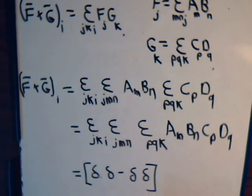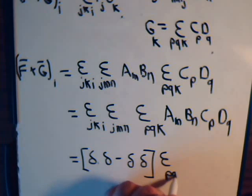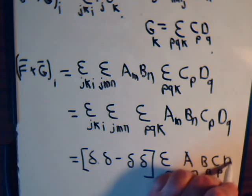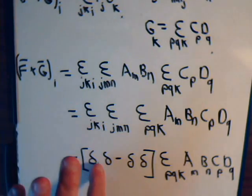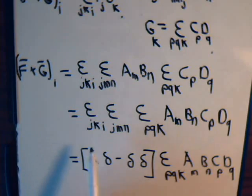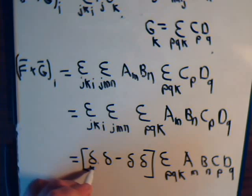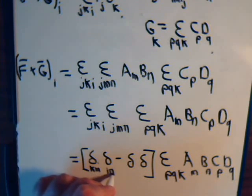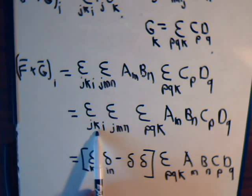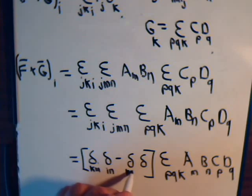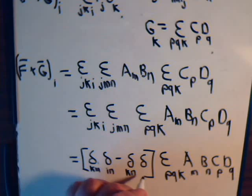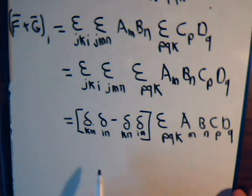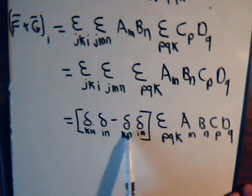From here, then this. Epsilon p, q, k, a m, b sub n, c p, d q. Now what would these be? Remember the pattern. The pattern is inner, inner, k, m, outer, outer, i, n. Then it is minus inner, outer, and then we have outer, inner. So there we have our labels.